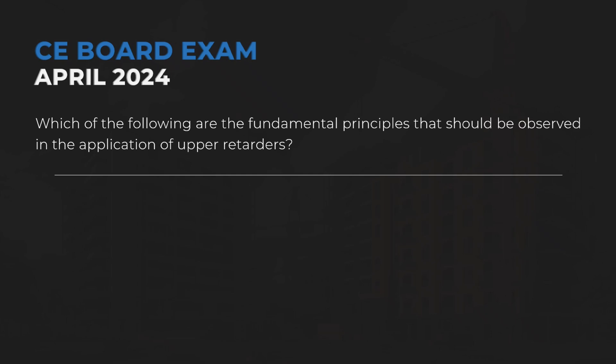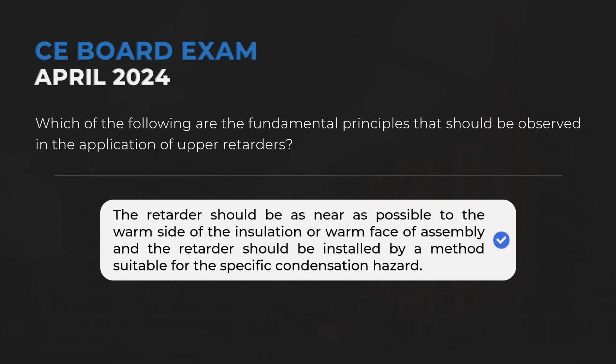Which of the following are the fundamental principles that should be observed in the application of vapor retarders? The retarder should be as near as possible to the warm side of the insulation or warm face of assembly, and the retarder should be installed by a method suitable for the specific condensation hazard.